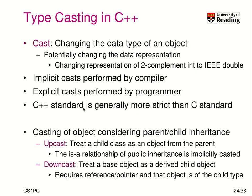Typecasts in C++. What is a cast? It means to change the data type of an object. Potentially, it also means to change the data representation — for example, when you have a two's-complement number such as an integer and you try to change this number into a double type.